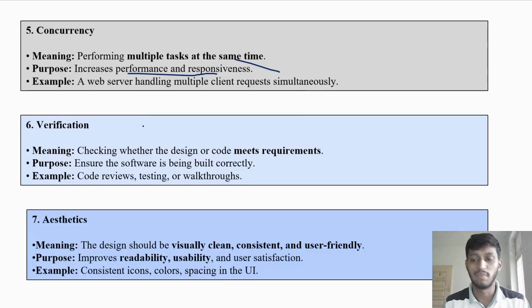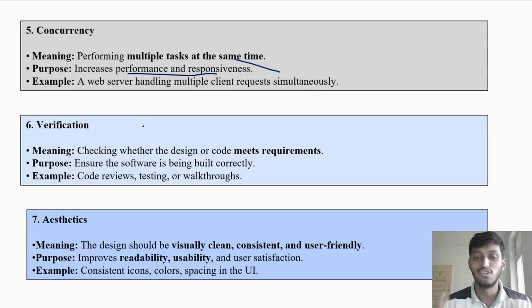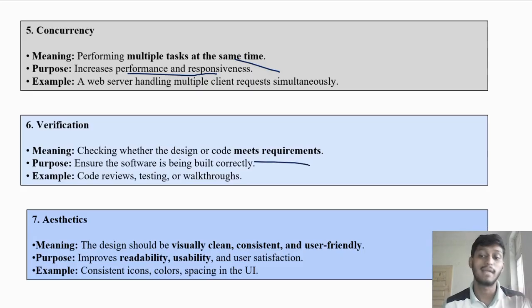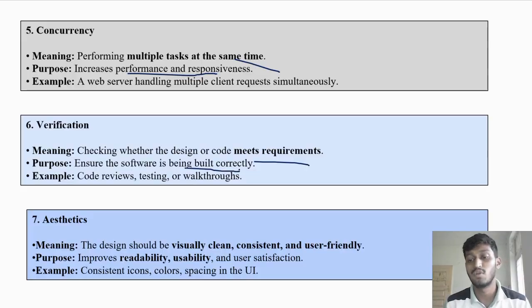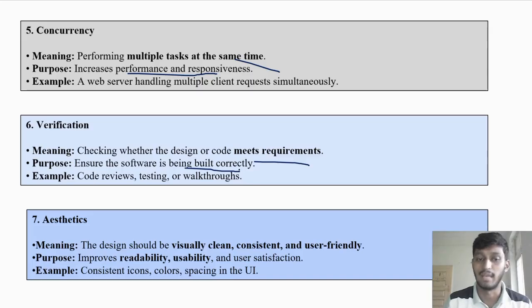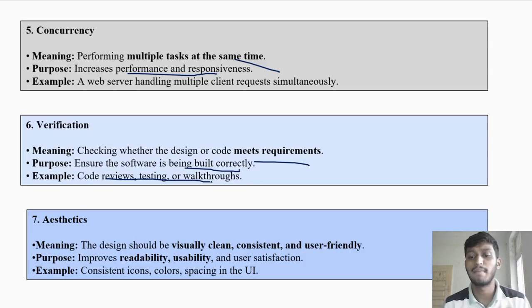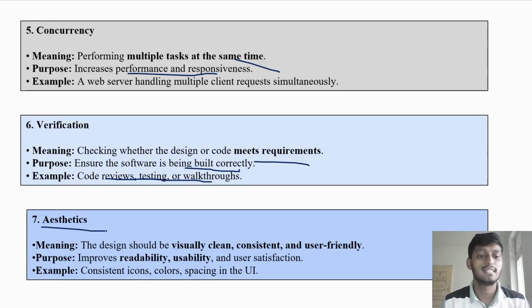Next is verification. Verification means checking whether what we have made — the code and design — meets the actual requirements collected in the first phase. The purpose is to ensure the software is being built correctly — verify that we are developing the software properly and all requirements are fulfilled. Examples include code review, where you look at and review the code, and testing — after building, you test whether it is working properly.